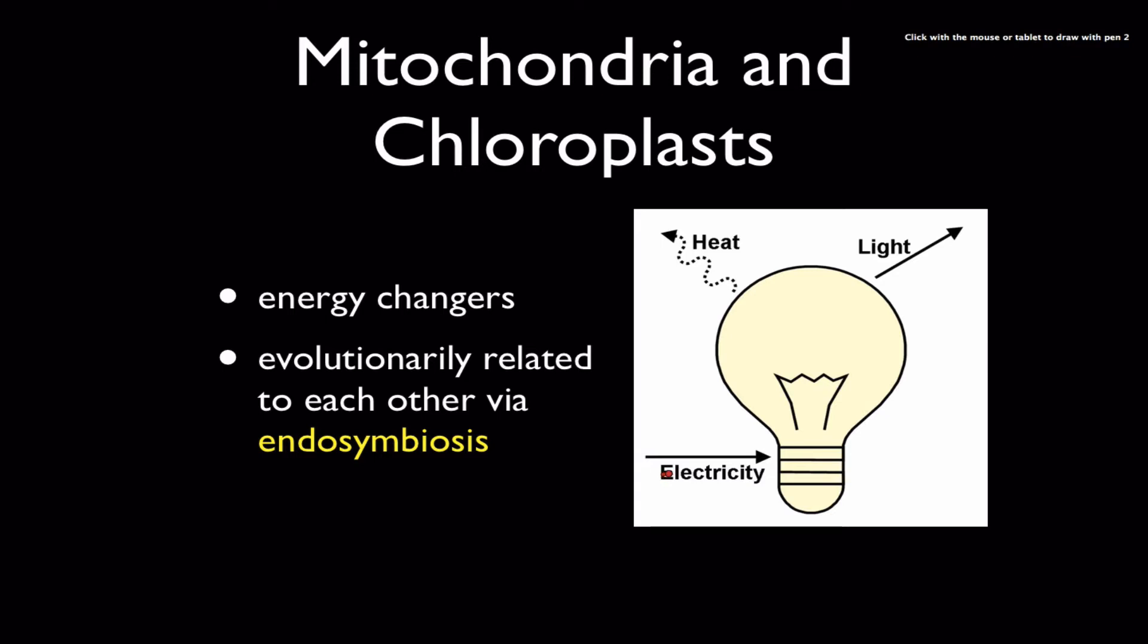Chloroplasts and mitochondria take in energy in different forms, of course, and then they release something that the cell needs. That's almost always ATP. We're going to talk more about that in a minute. And they also release heat as a byproduct also.